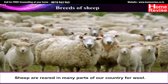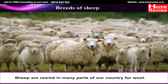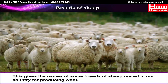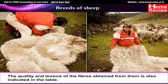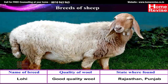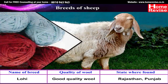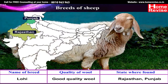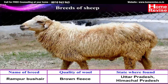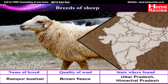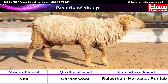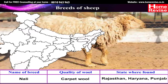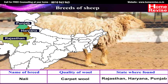Breeds of sheep: Sheep are reared in many parts of our country for wool. The following are some breeds and their wool quality. 1. Lohi — gives good quality wool, found in Rajasthan and Punjab. 2. Rampur Bushair — brown fleece, found in Uttar Pradesh and Himachal Pradesh. 3. Nali — carpet wool, found in Rajasthan, Haryana, and Punjab.